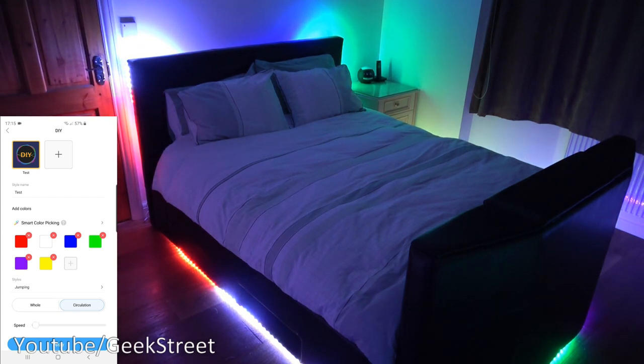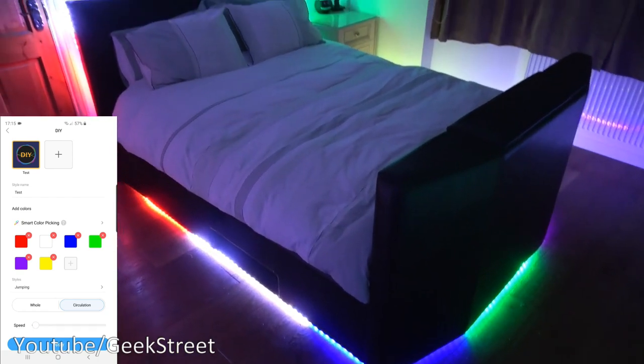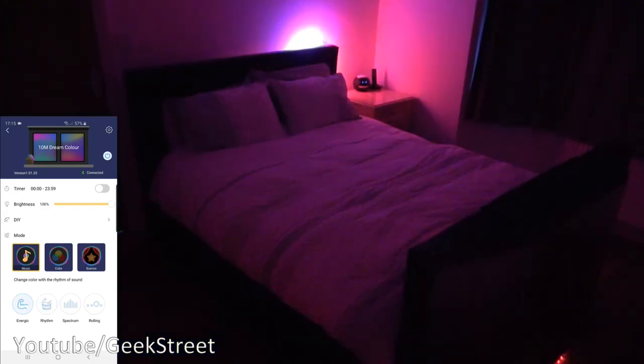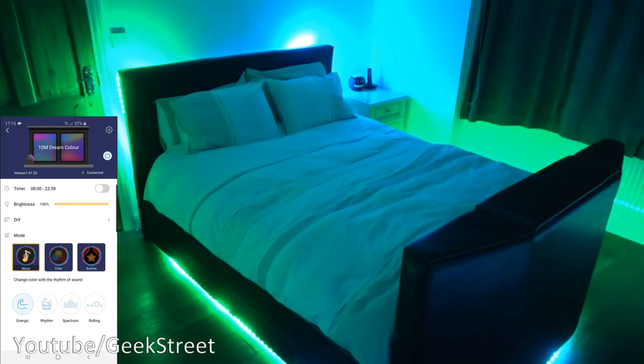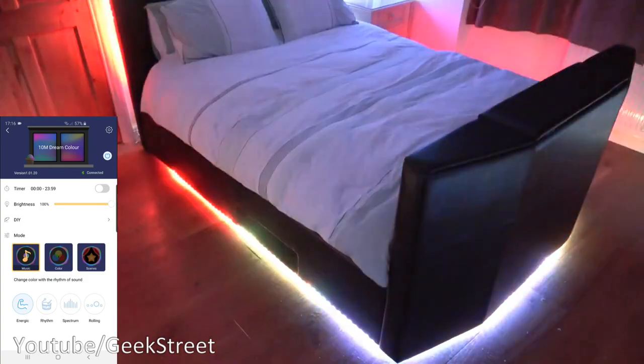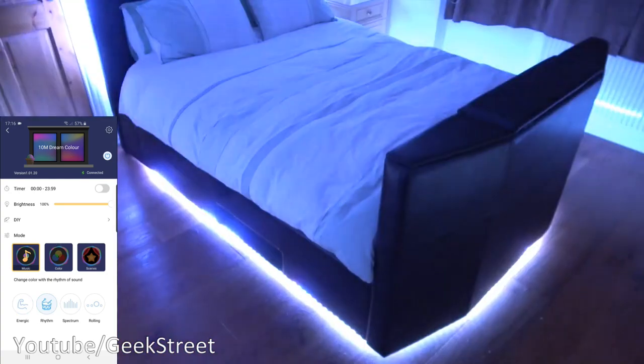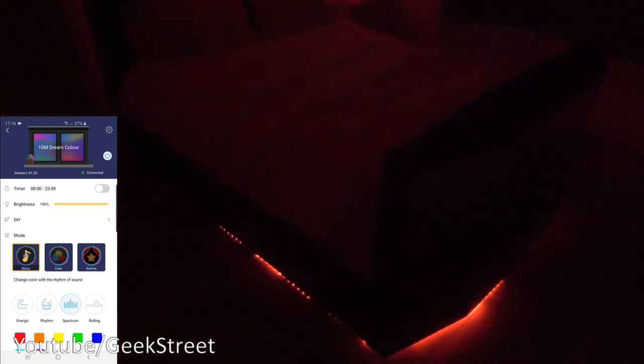If I go to music mode, test one two three, energetic. You can just see the lighting changing according to the sound, so pretty cool if you're watching a movie you can have these background lights going off as well. Let's go to rhythm, test one two three, spectrum test, and rolling. This is the rolling option and it just spins around the lights, so very impressive.